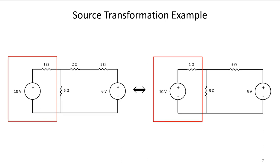We're going to take this circuit from our previous slide and combine the two and the three ohm resistor to give us five ohms. Now we have a voltage source and a resistor in series, we're going to transform that to a current source and resistor in parallel.